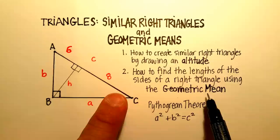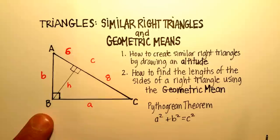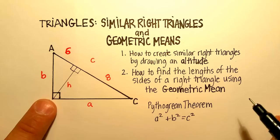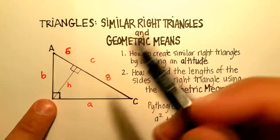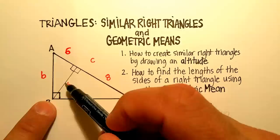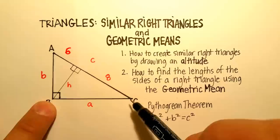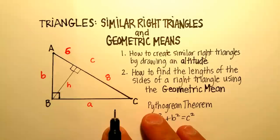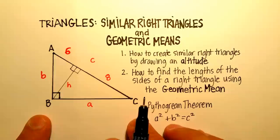We'll use the geometric mean to help solve the sides of this particular triangle and also some of the smaller triangles involved. In order to do this, I want to take you through how we create similar right triangles by drawing something called an altitude. The altitude of a right triangle is when you start at the 90 degree angle and create a line that goes perpendicular with the hypotenuse — it doesn't go to the midpoint, it just goes perpendicular from there. You'll notice there's a 90 degree angle on each side.